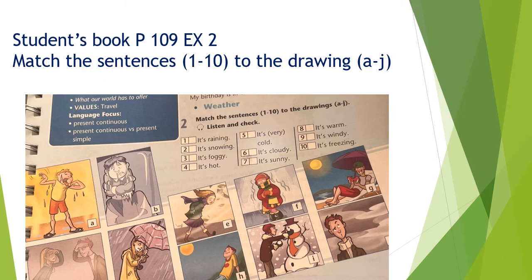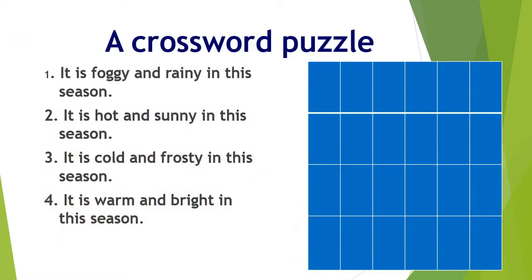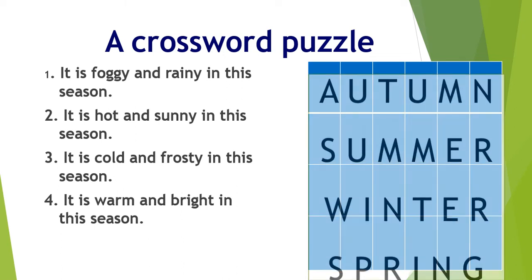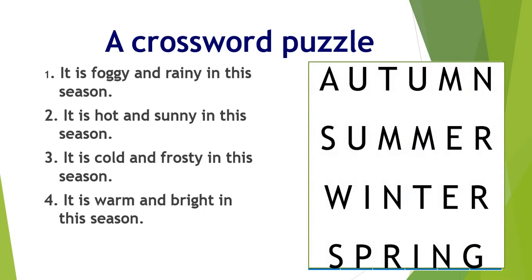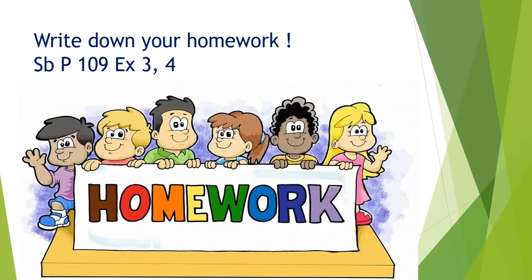The next task: a crossword puzzle. Read the sentences and solve the crossword — which season is being described? You have two minutes. Okay, very good, let's check. The first: autumn. The second: summer. The third: winter. And the fourth: spring. Well done.